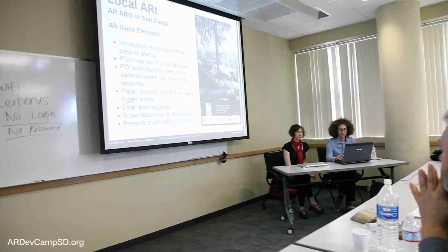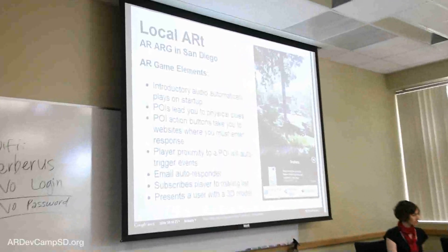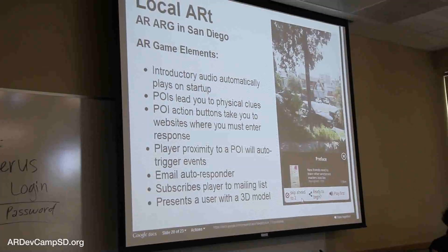Some of the other things we did: we used mainly POI — points of interest — so we weren't using near-field AR; it was really more geo-located clues. Each POI had buttons associated with it, like 'Ready to Begin,' 'Play First,' or 'Skip Ahead to Number Two.' We had to do these little skip-ahead things because sometimes you couldn't get to the next location — it's sort of a cheat button. And then we had a lot of auto-proximity triggers, so when you actually walked up to a location, something would happen.